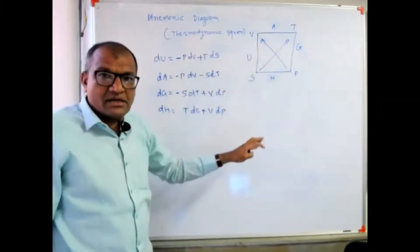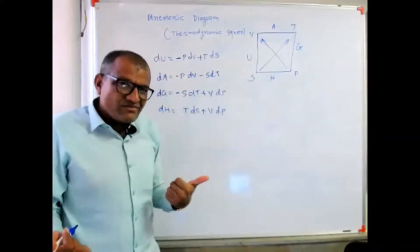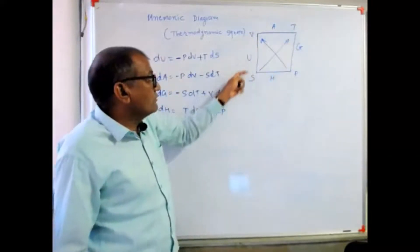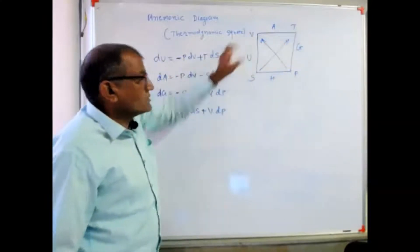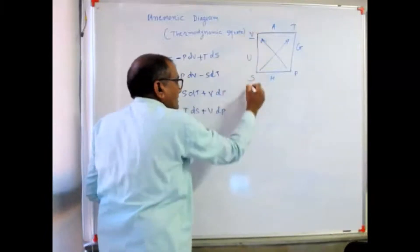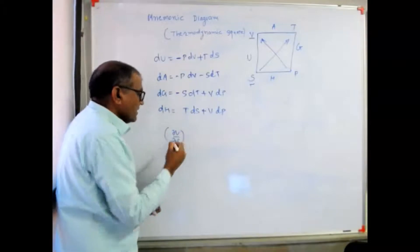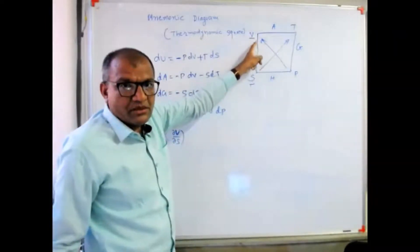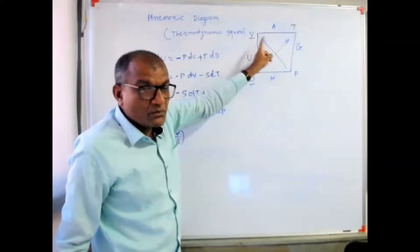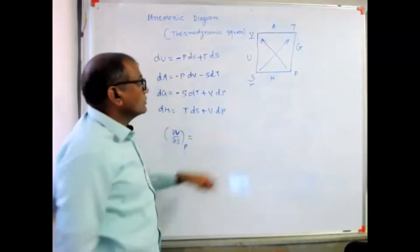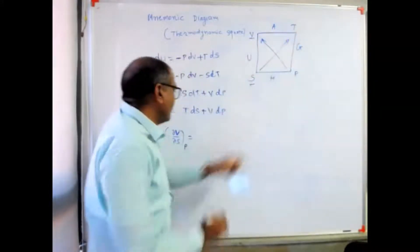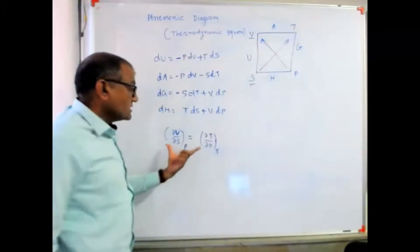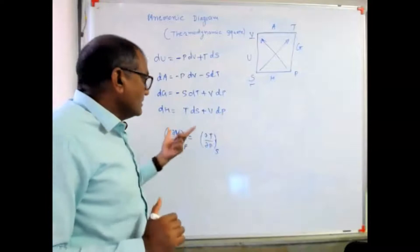We can also obtain Maxwell relations from the mnemonic diagram. In the case of Maxwell relations, there is no property term — all four Maxwell relations are written in terms of the canonical variables. For the first Maxwell relation, we consider: (∂V/∂S) at constant P equals (∂T/∂P) at constant V. This is the first Maxwell relation.